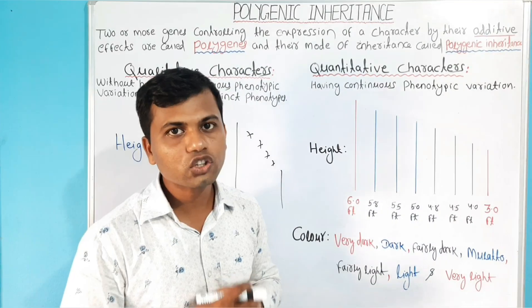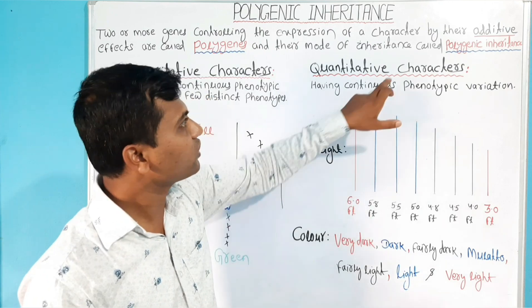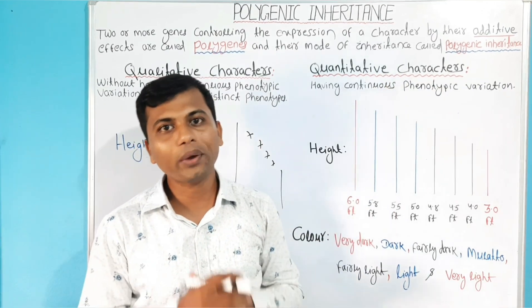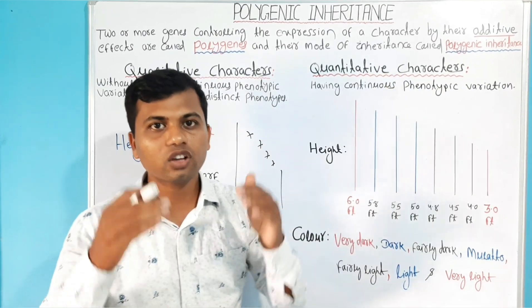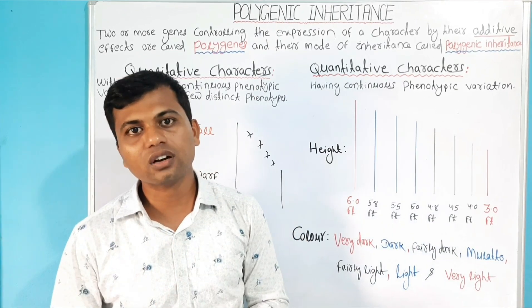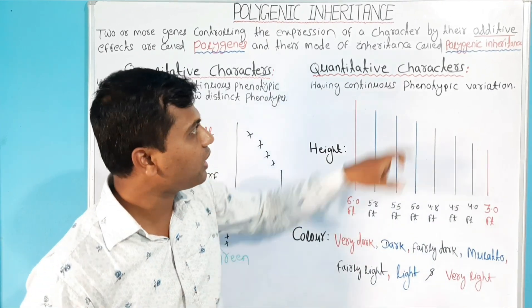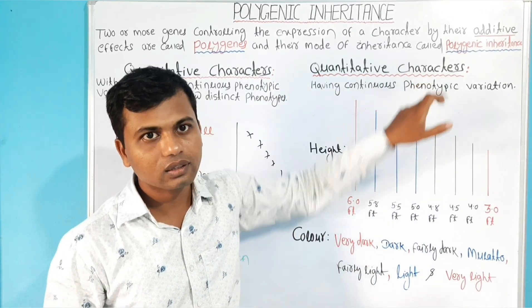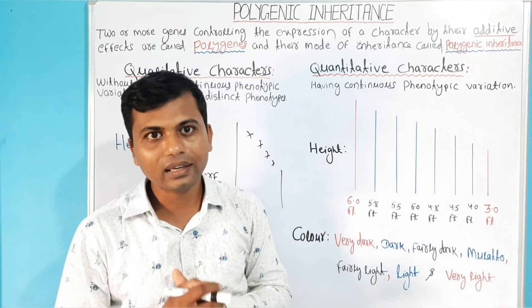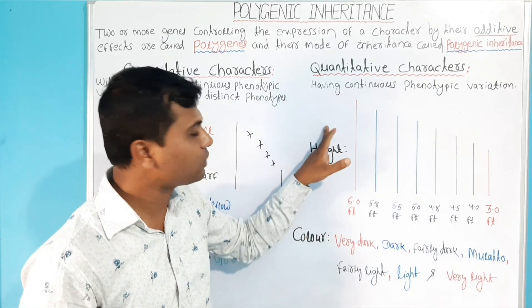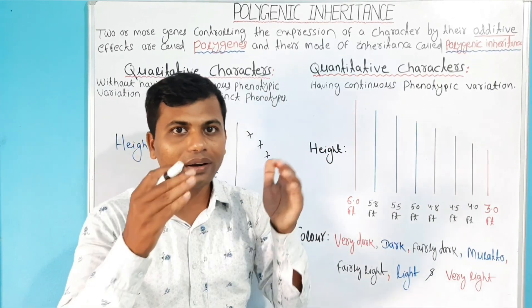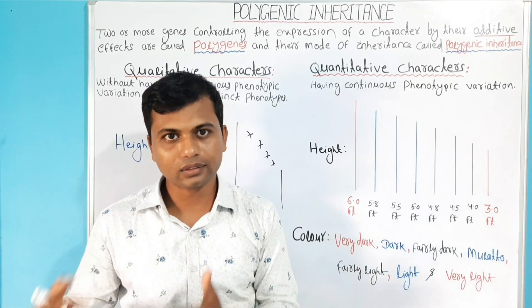Next, come to the Quantitative Characters. The character which is showing the continuous phenotypic variation is called as a Quantitative Character. Now, we will explain this by taking Height of the human. Actually, Height is a quantitative character.